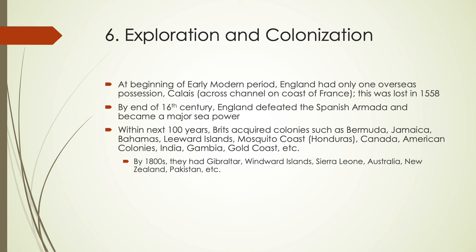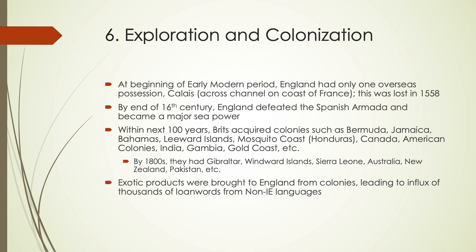What this ended up resulting in is the spread of English widespread throughout the world, as well as an increase in thousands of loanwords from other languages that were not Indo-European. As different products were being brought to England from their colonies, this led to an influx of loanwords for the names of those products — different kinds of spices, food, and animals brought in lots and lots of loanwords. This also created a global spread of English. We start seeing English spoken on many different continents — this is the period where English is expanding its reach and starts becoming a globalized language.